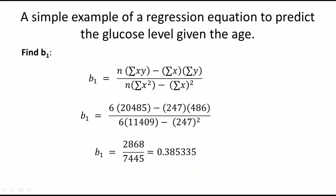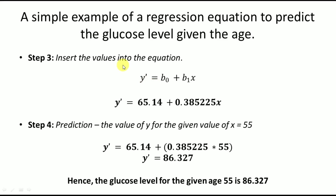Similarly, we calculate beta 1 using its equation. Putting the values from the table into the formula, the value of beta 1 is 0.3855. So once we have beta 0 and beta 1, the regression equation becomes: y equals 65.14 plus 0.3855 times x. This is the linear regression model for the given dataset.